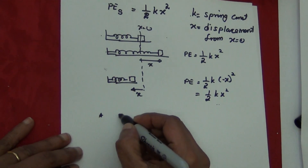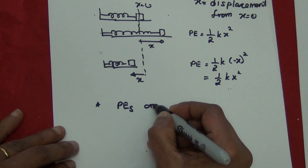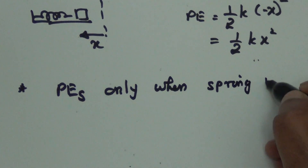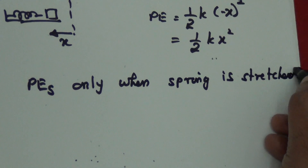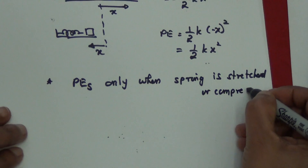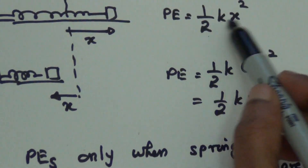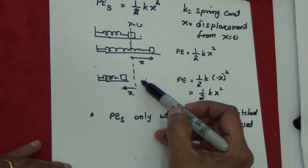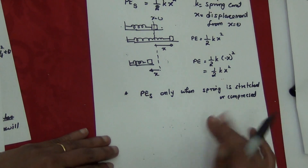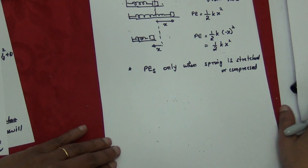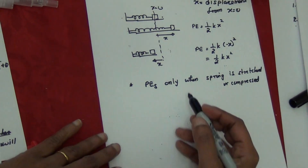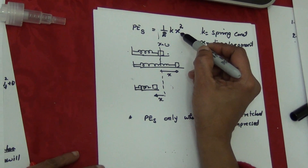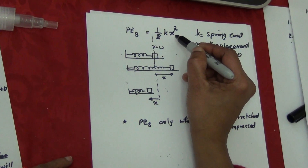You have spring potential energy only when the spring is stretched or compressed. When it is at equilibrium, your x is zero, so there is no potential energy. By stretching or compressing only, you can store the potential energy. Make sure this equation looks like kinetic energy, which is ½mv², but remember this is the potential energy of the spring.